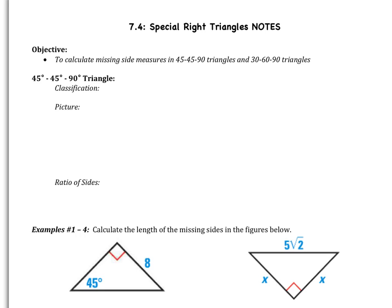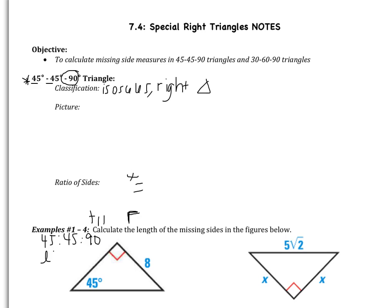We're going to start with 45-45-90 triangles. When I say 45-45-90, it means the triangle has two 45-degree angles and one 90-degree angle. We classify triangles in two ways: by sides and by angles. We notice we have two 45-degree angles — two angles are the same — so this is an isosceles triangle. And since we have a 90-degree angle, this makes it a right triangle. So it's an isosceles right triangle.